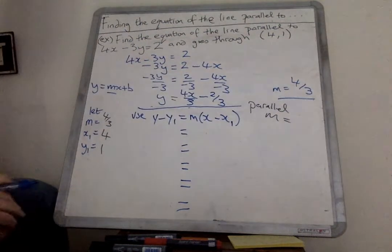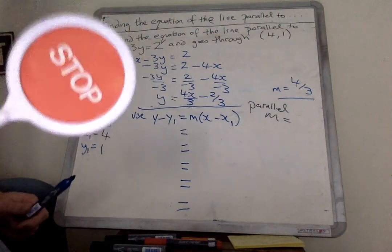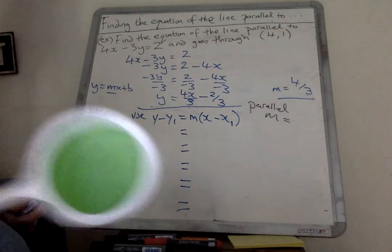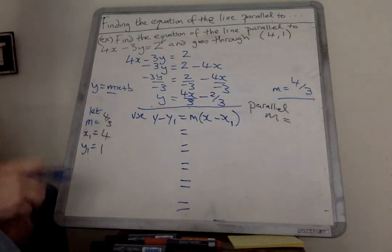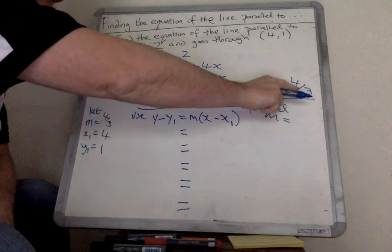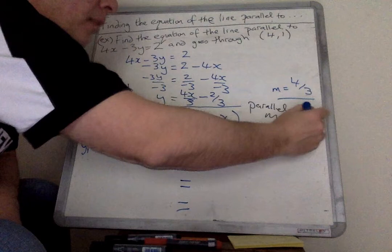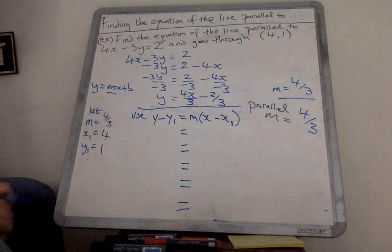Now I need to know what the parallel m is. Do you remember what it is? Stop the video, say what it is, then press go and check your answer. Okay, if this is the m value, you've got a line that's parallel to this one also has the same slope number. So it is also 4 thirds.